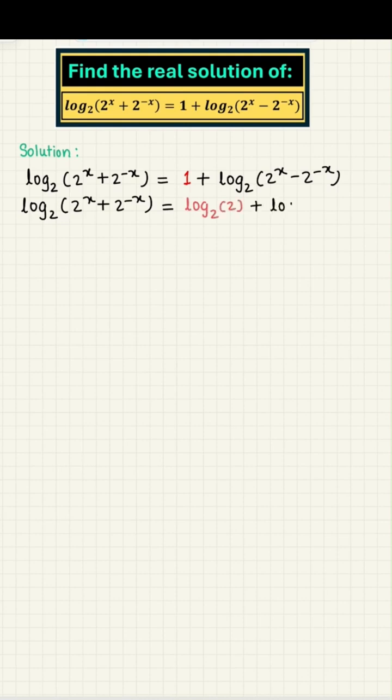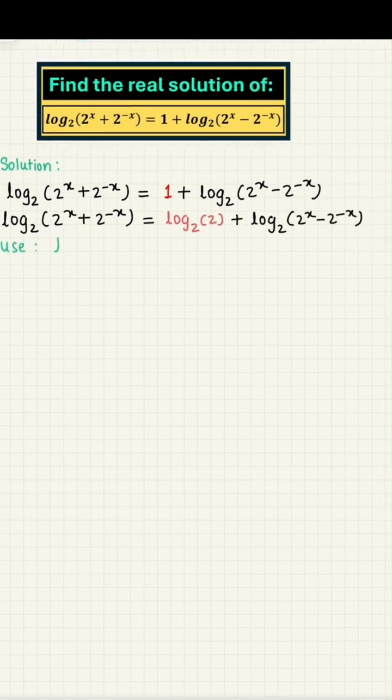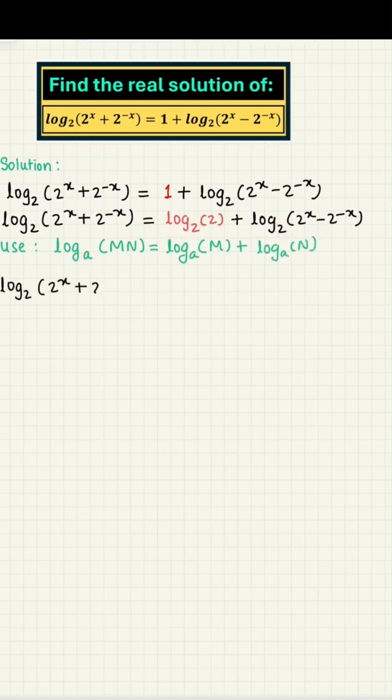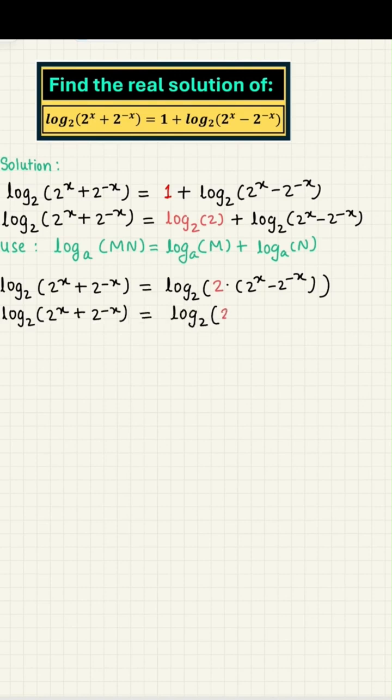Next, let's use the product rule of logarithms on the right-hand side and get log to the base 2 of 2 times 2 to the power x minus 2 to the power minus x. Next, we're going to do some math magic and on the right-hand side, add the power of 2 for the two terms inside the argument of the log function. And all this while, we did not touch the left-hand side even once.